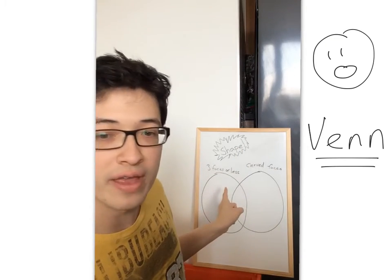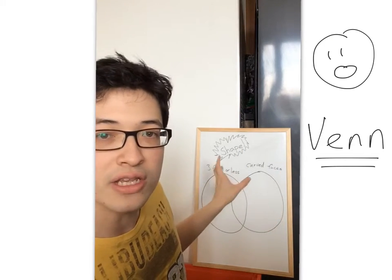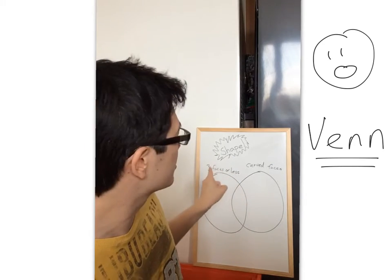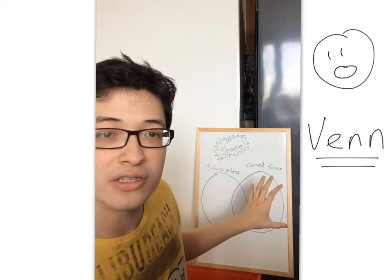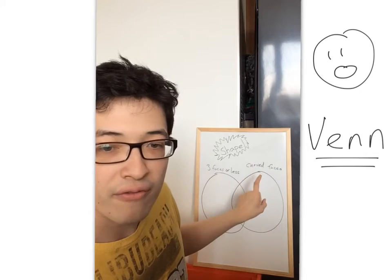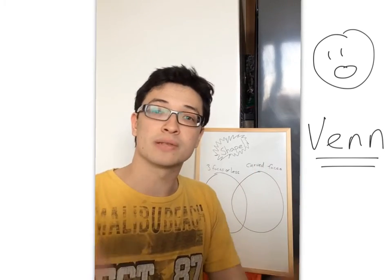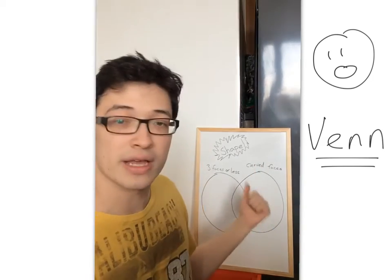So this circle over here says 3 faces or less. So any shapes or objects that have 3 faces or less go into that circle. And this circle over here says curved faces. So basically, any shapes that have a curved face can go into that circle.